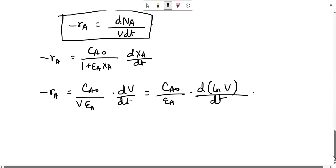Which in turn reduces to CA0 by epsilon A into d(ln V)/dt. Now when you have experimental data of your reaction, then you can carry out the differential method of analysis or the integral method of analysis to see the kinetics of your system problem and get the parameters.